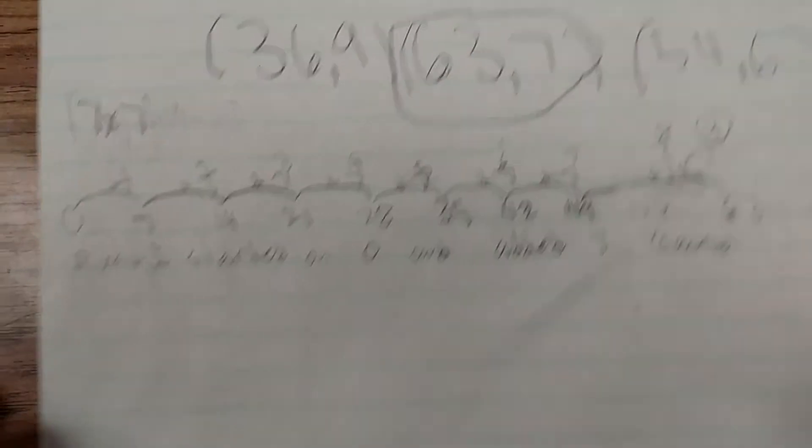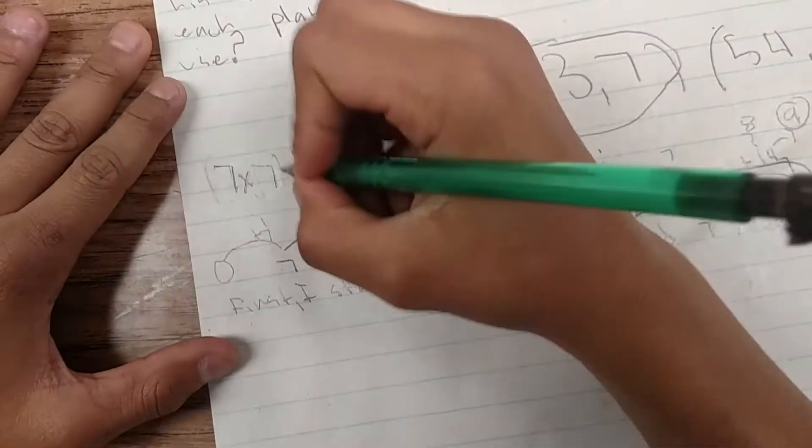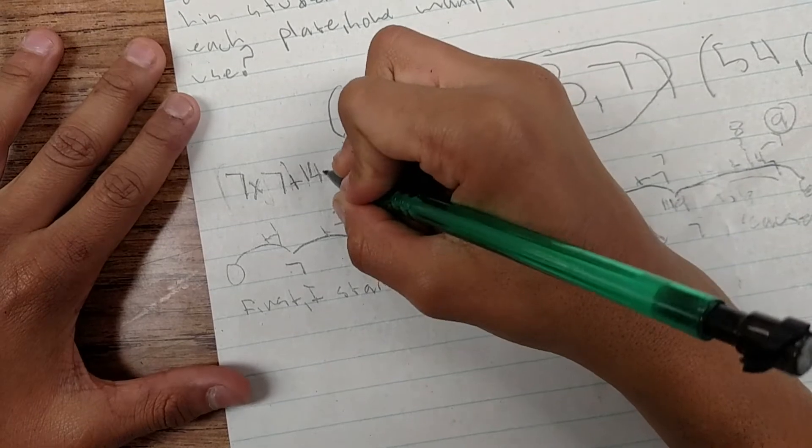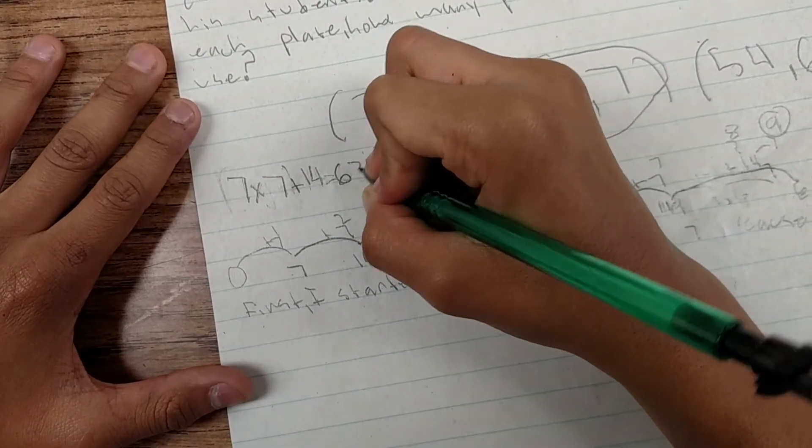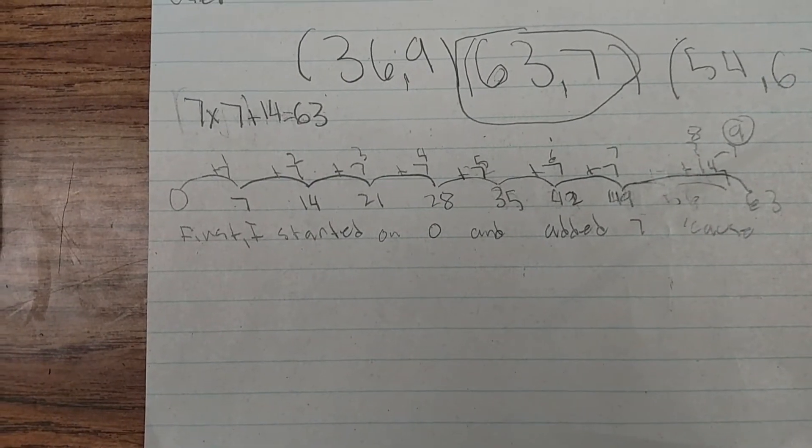So first you did 7 groups of 7. And then what did you do next? And then I added 14 to make it faster. Okay. And it got me to 63. So first you did your 7 groups of 7. And then you added 14? Yeah.